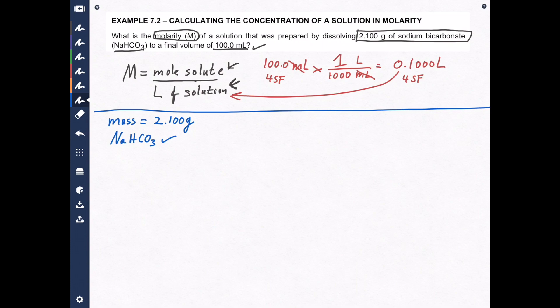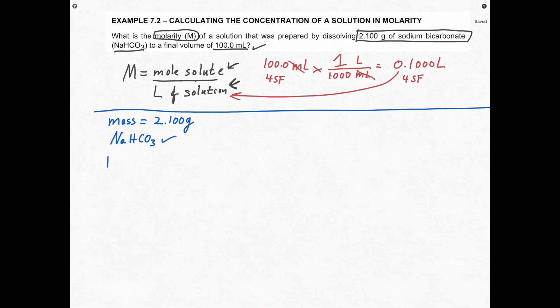First of all, from the chemical formula we know that we have 1 times sodium, 1 times hydrogen, 1 times carbon, 3 times oxygen. If you want to calculate molar mass, we need to know the atomic mass of each atom or ion inside this molecule. So that means I have 1 times sodium. I don't happen to know the molar mass of sodium, we'll look it up.